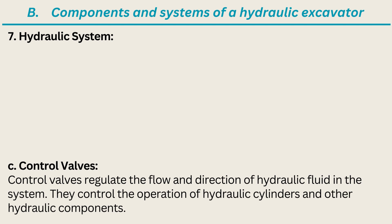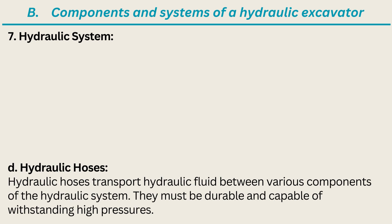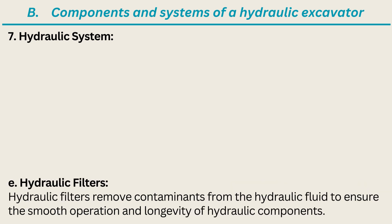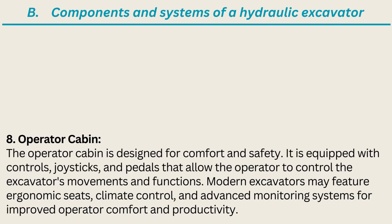c) Control valves — regulate the flow and direction of hydraulic fluid in the system, controlling the operation of hydraulic cylinders and other hydraulic components. d) Hydraulic hoses — transport hydraulic fluid between various components of the hydraulic system; they must be durable and capable of withstanding high pressures. e) Hydraulic filters — remove contaminants from the hydraulic fluid to ensure smooth operation and longevity of hydraulic components.